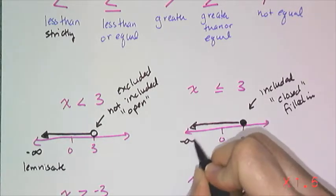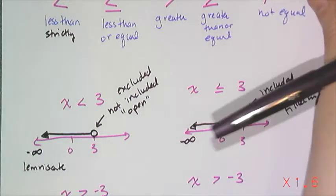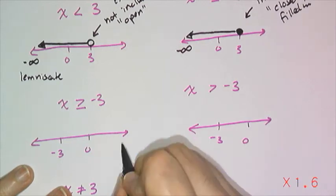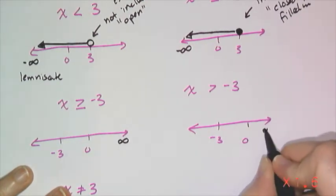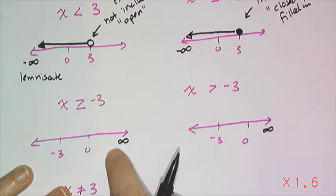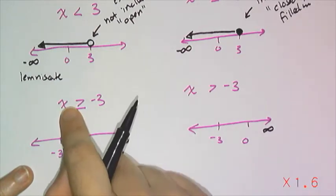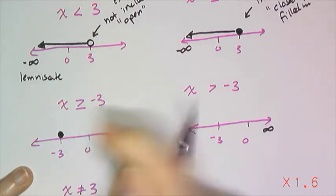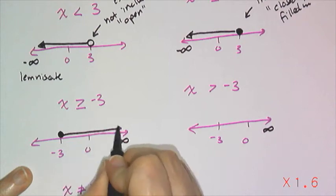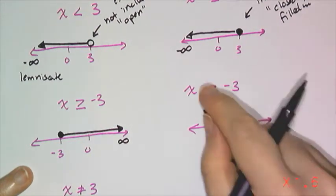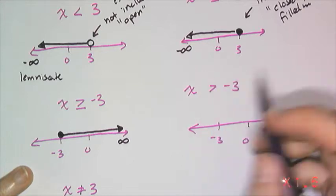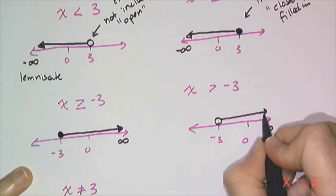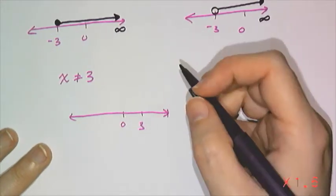Looking at the next set — these are greater than symbols, so greater than goes towards positive infinity. I write a lemniscate without the negative sign. In this case, I want inclusive because the 'or equal to' means inclusive, so a filled-in dot going towards positive infinity. And the strictly greater than — exclusive, because there's no line underneath — means an open dot going towards positive infinity.